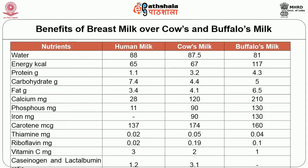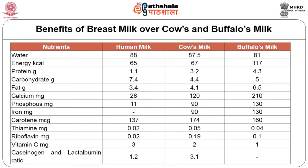Now we will look at the benefits of breast milk over cow's milk and buffalo's milk. The table shows nutrients present in cow's milk, buffalo's milk, and breast milk. The energy content of cow's milk is about 67 calories, breast milk is 65 calories, and buffalo's milk is very high at 117 calories. The protein content is very low in breast milk at only 1.1 grams, compared to 3.2 grams in cow's milk and 4.3 grams in buffalo's milk. The amount of carbohydrate is more in breast milk at 7.4 grams, compared to 4.4 grams in cow's milk and 5 grams in buffalo's milk.